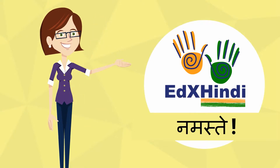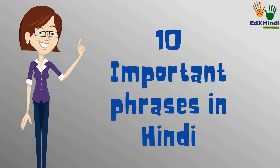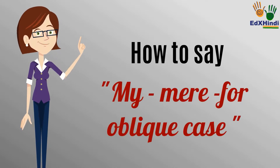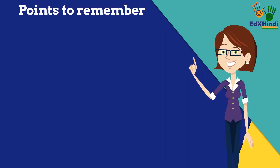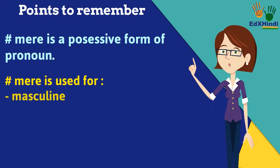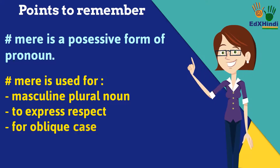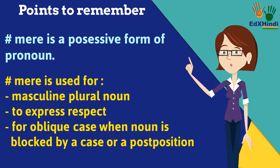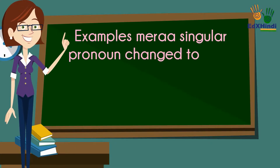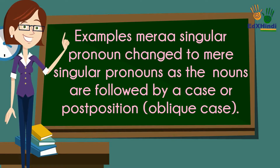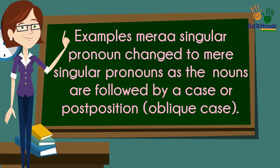This is the next list of 10 important phrases in Hindi. In this video you will learn how to say 'my' as 'mere' for the oblique case in Hindi. Points to remember: 'mere' is a possessive form of the pronoun. 'Mere' is used for masculine plural nouns, to express respect, or for the oblique case when the noun is followed by a postposition.